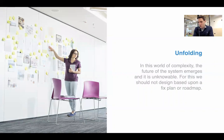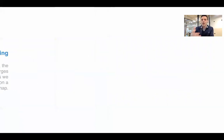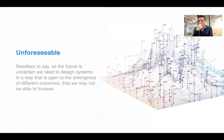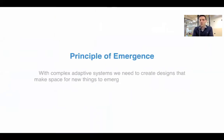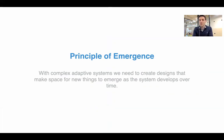We have to let the future unfold and not fully plan for it. In this world of complexity, the future of the system emerges and it's unknown. We should not design based upon a fixed plan or roadmap, but must create space for self-organisation and emergence and unforeseen outcomes. As the future is uncertain, we need to design systems in a way that is open to the emergence of different outcomes that we may not be able to foresee. We need to create designs that make space for different pathways to unfold and new things to emerge as the system develops over time.